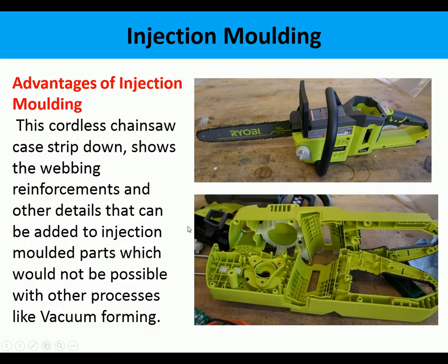Looking at the advantages of injection moulding, we can see here a cordless chainsaw with webbing, bosses, and all this detail which is only possible with injection moulding.